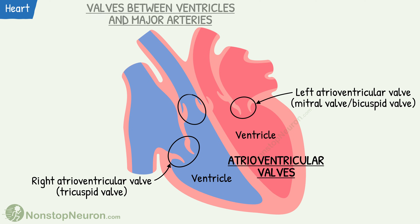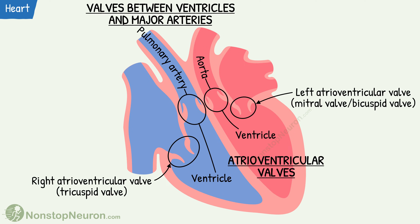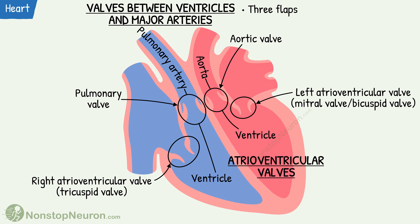The other two valves are present between ventricles and major arteries. The valve between the right ventricle and pulmonary artery is called the pulmonary valve, and the valve between the left ventricle and the systemic aorta is called the aortic valve. They both are made up of three flaps. Because of their half moon-like shape, they are also called semilunar valves.